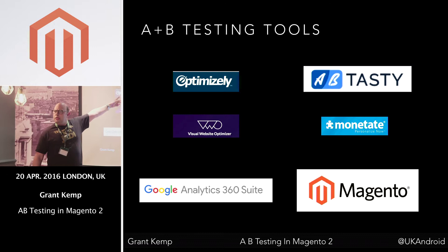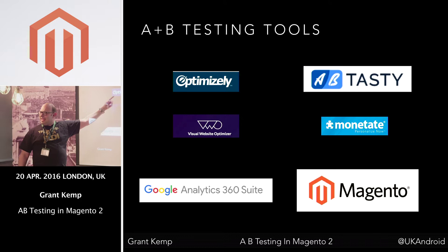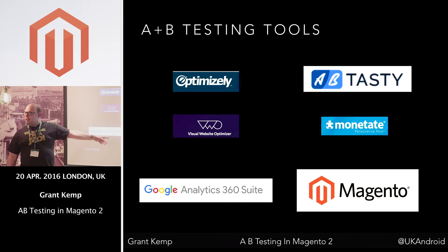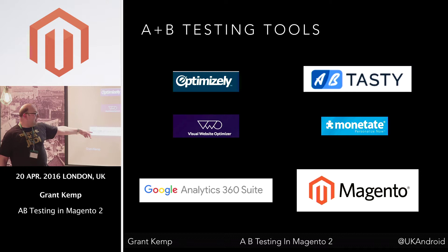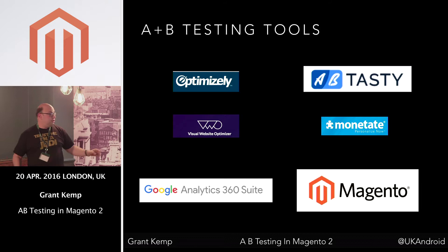This is how people use A-B testing at the moment. Anyone use Optimizely? A few — nice tool. AB Tasty? I found that one, it's actually really awesome, you should have a look and get a demo. Visual Web Optimizer? A few. Monetate? A few. And there's the new Google Analytics thing — anyone using that? Wow. And finally, we've actually got probably, in my opinion, the best of the bunch now available in Magento.